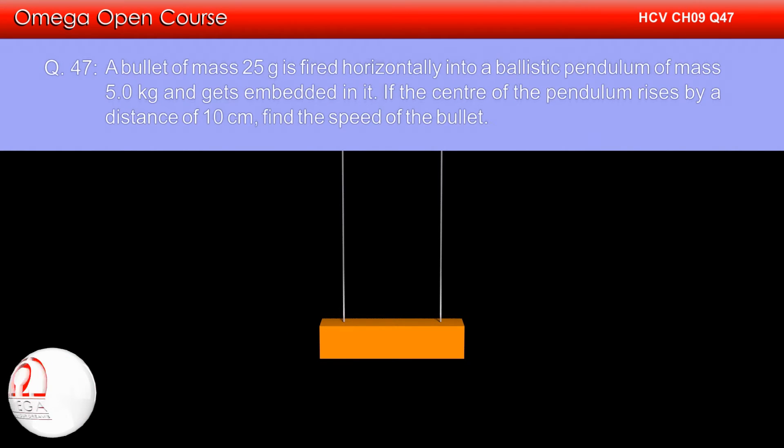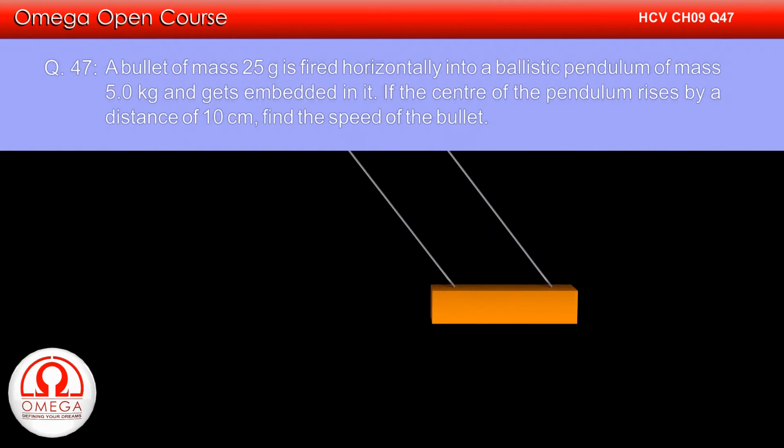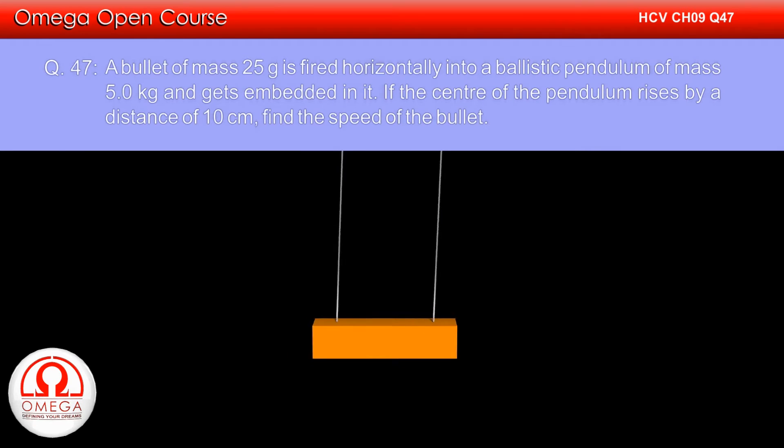A bullet of mass 25 grams is fired horizontally into a ballistic pendulum of mass 5 kg and gets embedded in it. If the center of the pendulum rises by a distance of 10 cm, find the speed of the bullet.